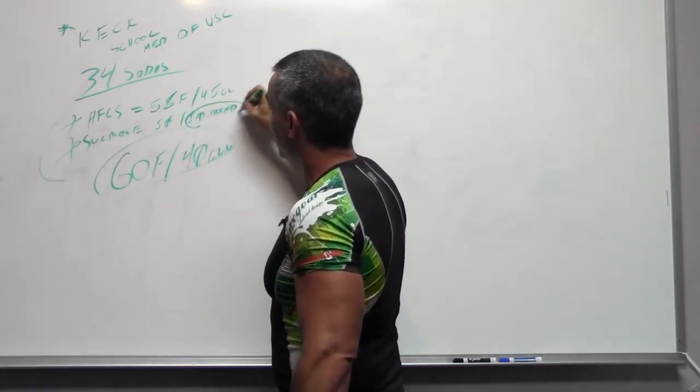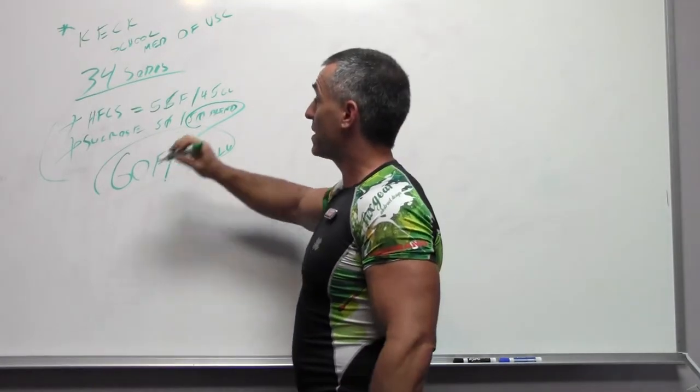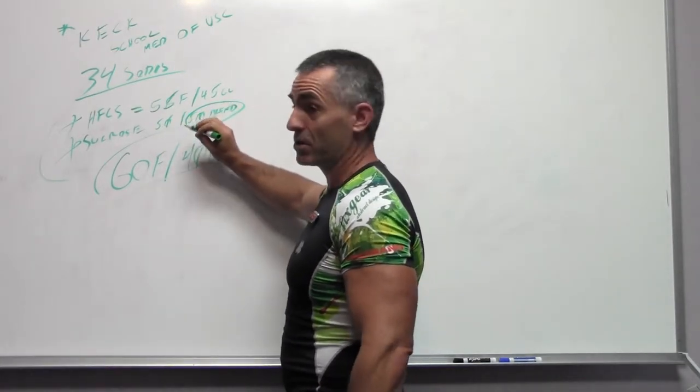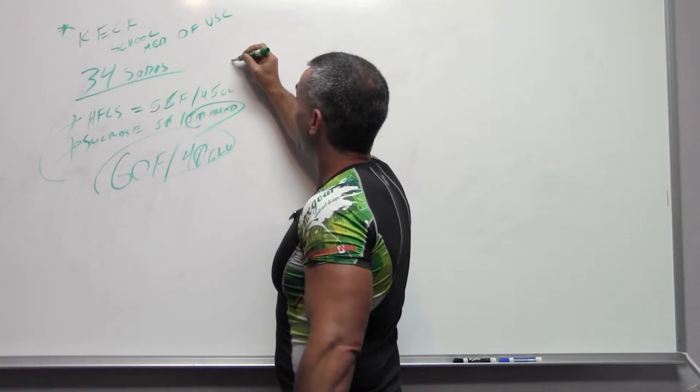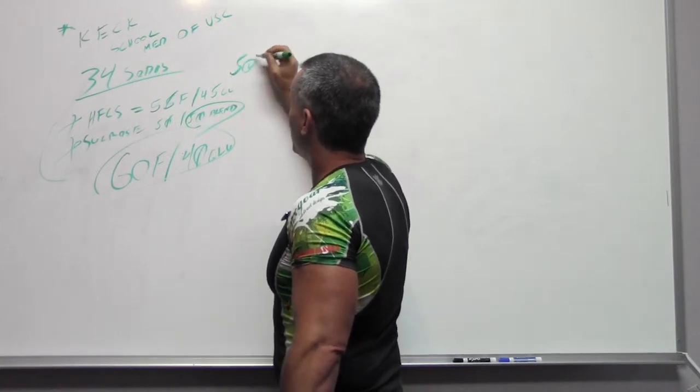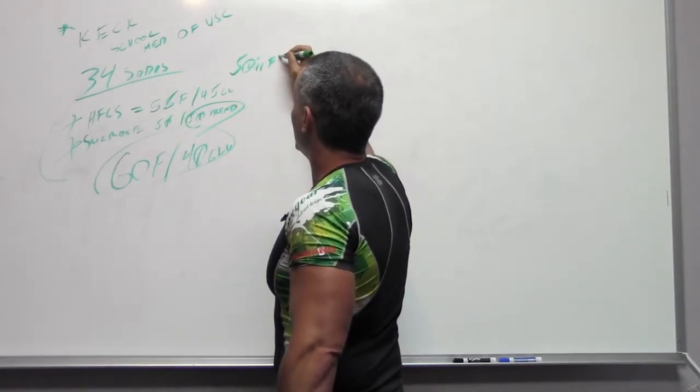now remember, for table sugar, it's about a 50-50 blend: 50% fructose, 50% glucose. They found much higher than 50% fructose. So what the researchers were claiming is that these high fructose corn syrup sugar free sodas